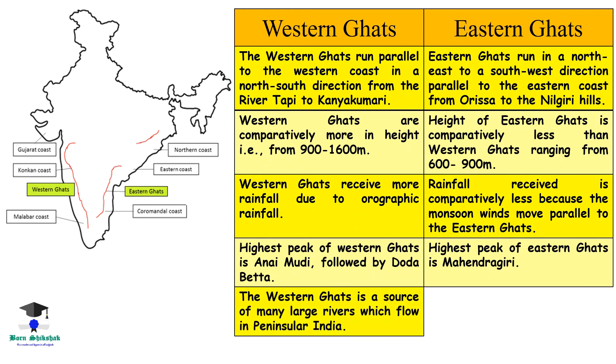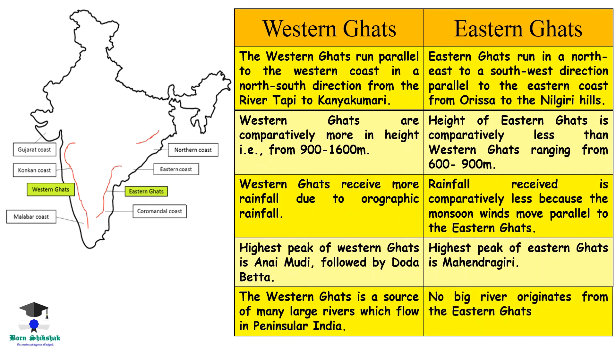The Western Ghats are a source of many large rivers which flow through peninsular India. No big river originates from the Eastern Ghats.